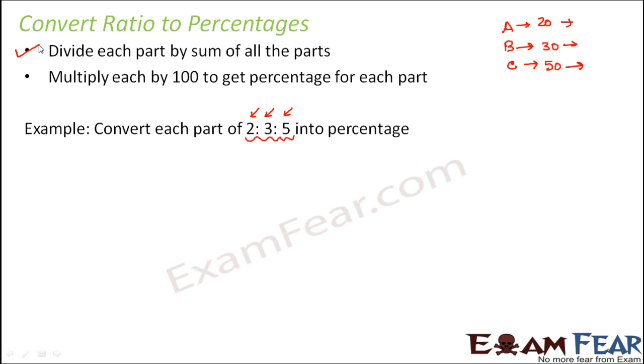So let's see how do we handle this. The first step is divide each part by sum of all the parts. So sum of all the parts is 2 plus 3 plus 5 which is 10. This is the sum of all the parts. So for the first part, 2 divided by sum of all the parts. For the second part it would be 3 divided by sum of all the parts, and for the third part it would be 5 divided by sum of all the parts. So that's our step one.